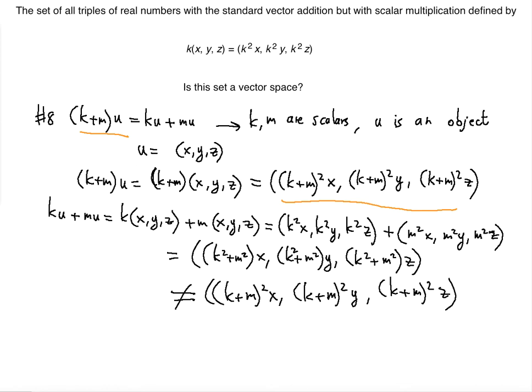We just showed that these two guys are not equal under the given constraints. So therefore, not a vector space. Axiom number 8 fails.